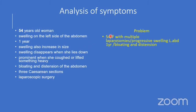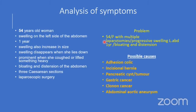The clinical problem: a 54-year-old female with multiple laparotomies and progressive swelling on the left side of the abdomen for a year with bloating and distension. The possible causes from the history include adhesion colic and incisional hernia. Others include pancreatic cyst or tumor, gastric cancer, colonic cancer, or an abdominal aortic aneurysm.